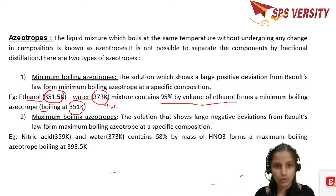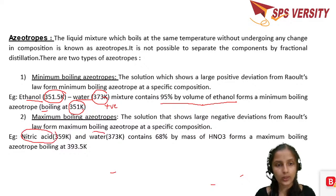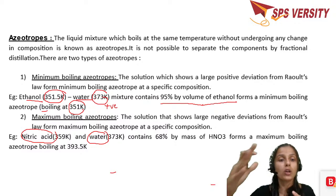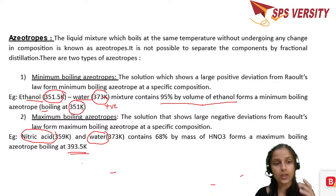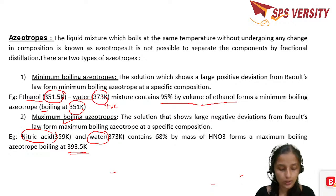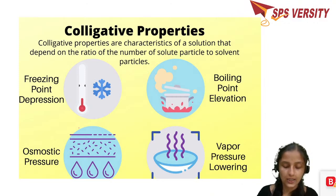For maximum boiling azeotropes, consider nitric acid and water. Both components have their own A–A and B–B interactions. After mixing, they come closer, volume decreases, and the interaction becomes stronger. To boil them, you must supply more heat — so the boiling temperature is higher. Since interactions are stronger (negative deviation), these form maximum boiling azeotropes. Solutions showing negative deviation form maximum boiling azeotropes; solutions showing positive deviation form minimum boiling azeotropes.